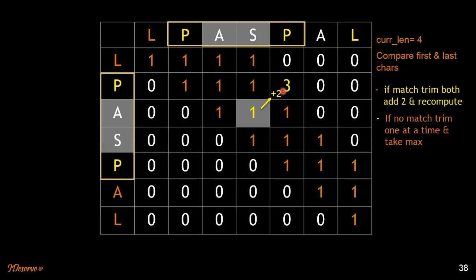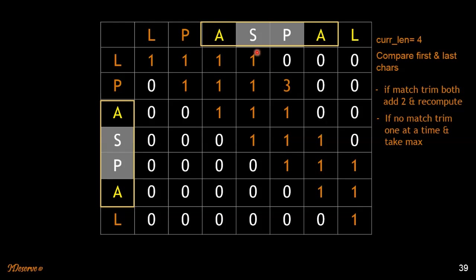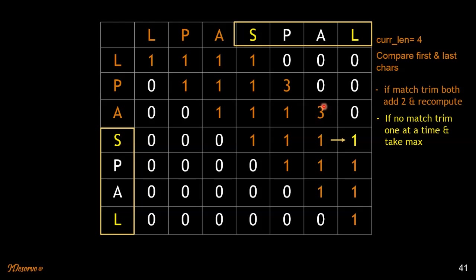For the next substring of length 4, ASPA, the first and last characters also match. We follow the first rule — trim out the first and last characters — and add 2 to the LPS of the remaining trimmed string. The next substring of length 4 does not have first and last characters matching, so we follow the second rule and take the max of the trimmed substrings.